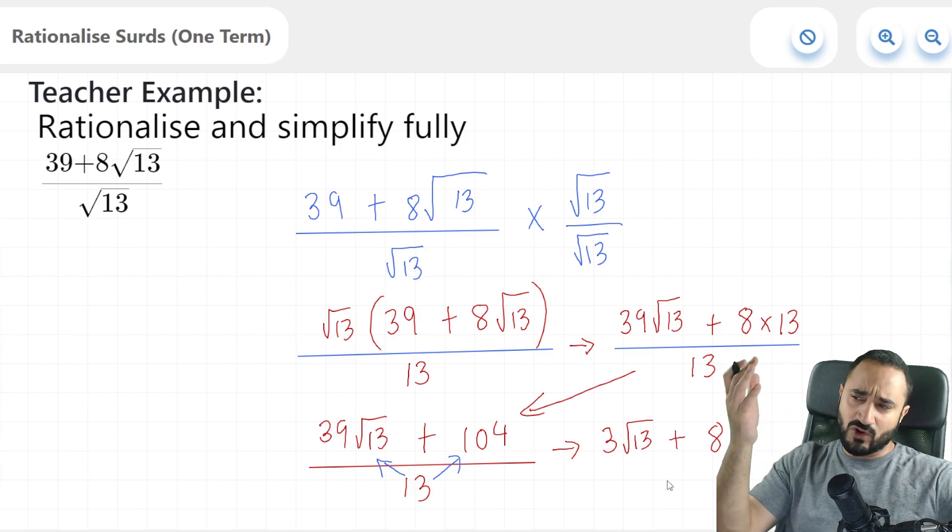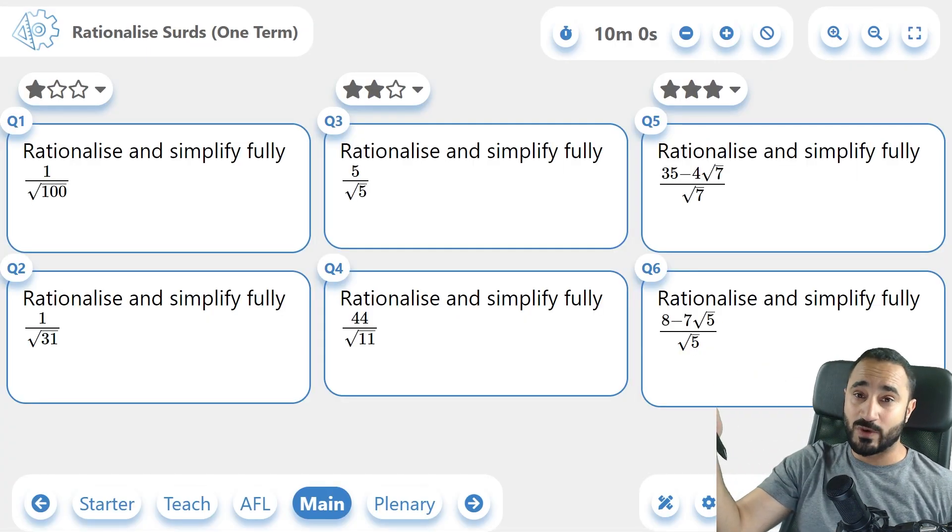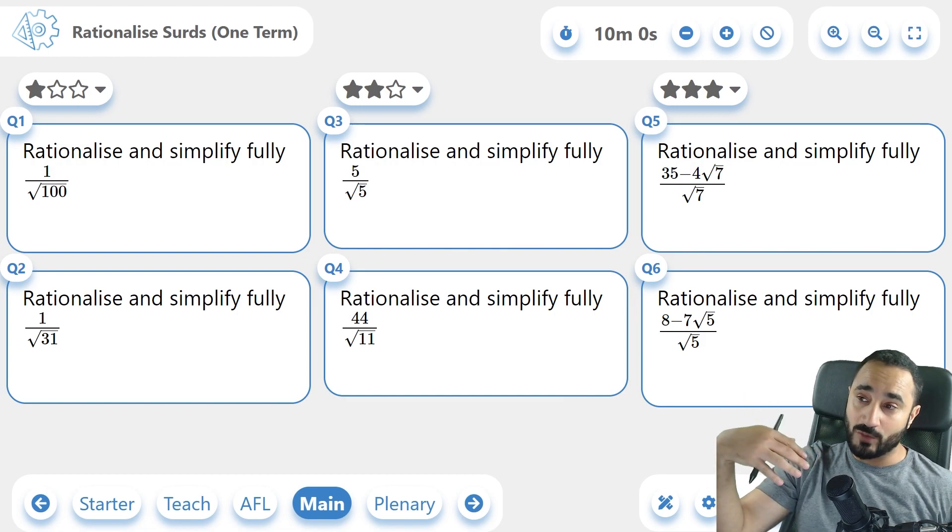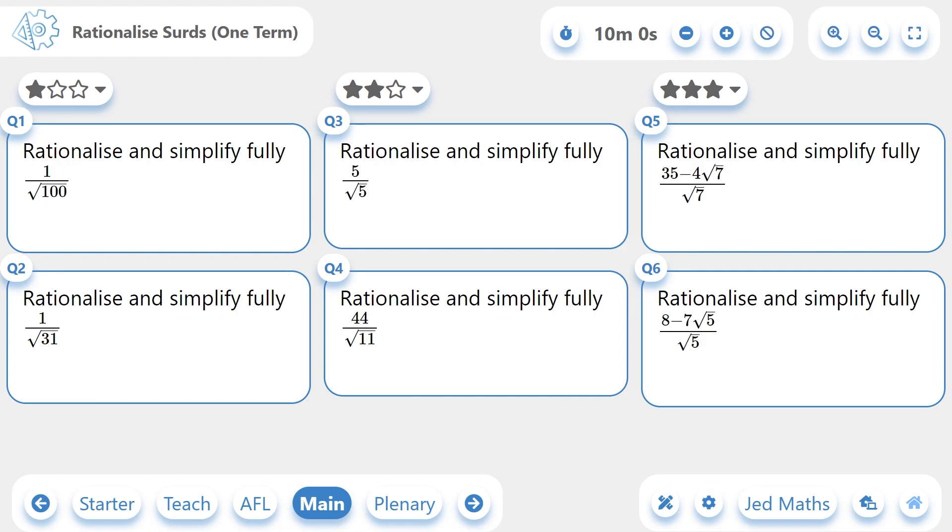So that's it for our examples on rationalizing surds with one term. So here are the practice questions. There are six of them. Answer all of them if you can. And in the comments below, tell me how many you got correct. And if you need any help with any of the questions, I'll be happy to support you in the comment section below. So I'm going to leave this up here for five seconds. And then at the end, I'm going to show the answers.